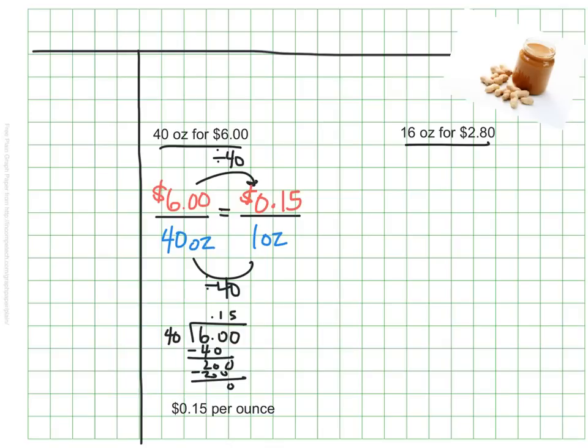I'll need to do the same thing for the smaller jar to be able to compare their prices now. I've set this up in a similar way, and in this case, I need to scale down by dividing my 16 ounces by 16 to be able to find the price of just one of those ounces. So again, that means I need to divide my $2.80 by 16. So I'll go ahead and set that up.